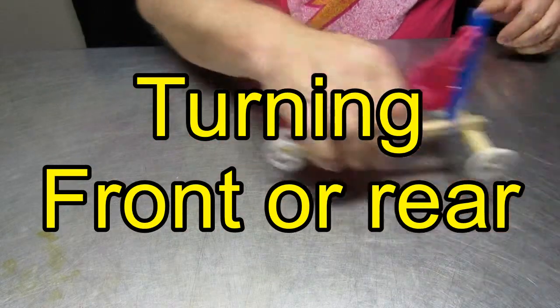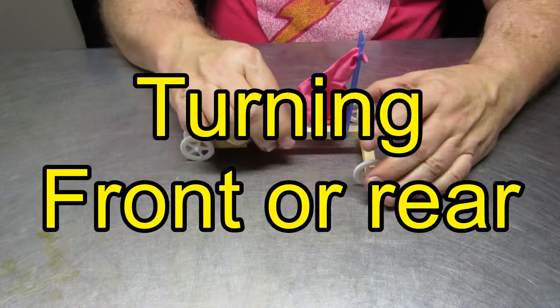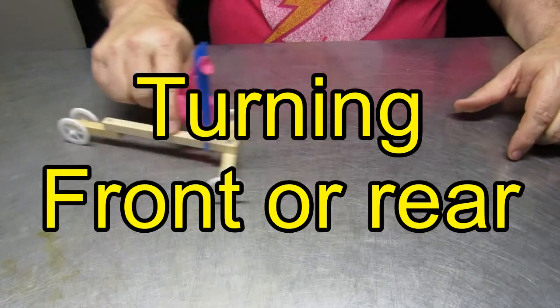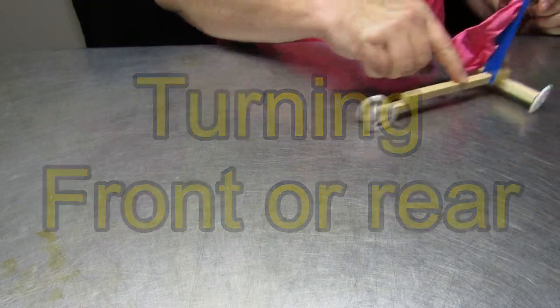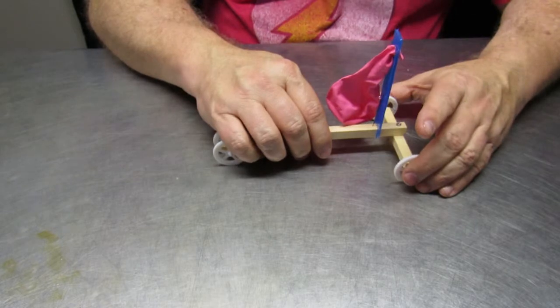Today's Two Minutes of Science is all about turning. We're going to take advantage of that rubber band powered car, only with the balloon, to see what works best, front wheel turning or rear wheel turning.